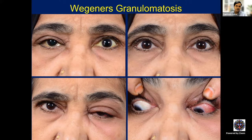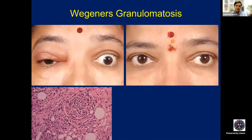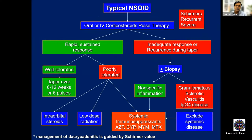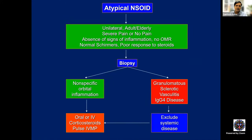Another patient with Wegener's granulomatosis had acquired telecanthus, broadening of the nasal bridge, and very severe inflammation that looked like preseptal cellulitis. The diagnosis was again Wegener's granulomatosis on histopathology. Treatment: intravenous methylprednisolone is started; when there is good response it is continued alone, but if the patient has modest response at the third or fourth cycle, immunomodulators are added. The role of biopsy in lacrimal gland inflammation is key — it gives important leads for specific etiology.